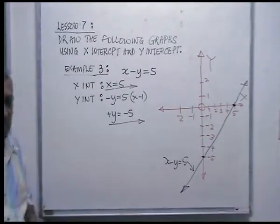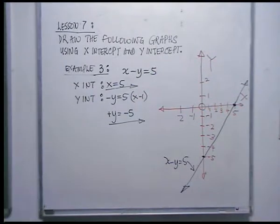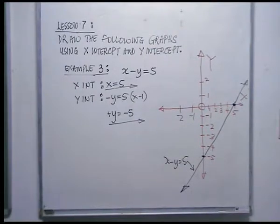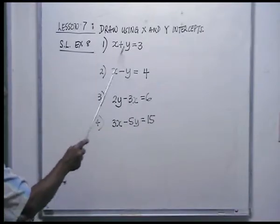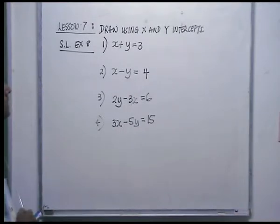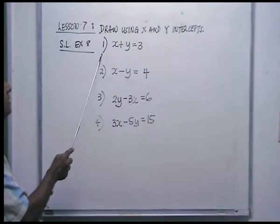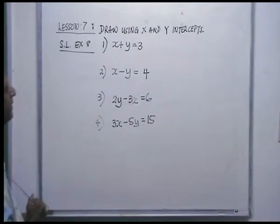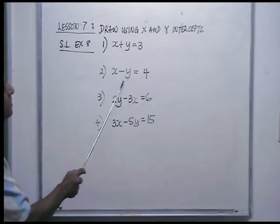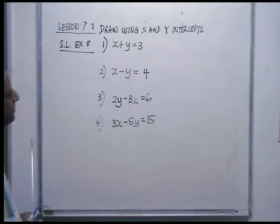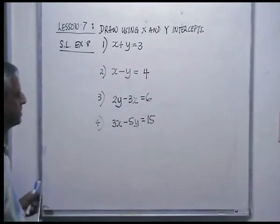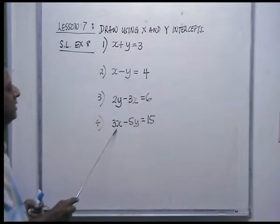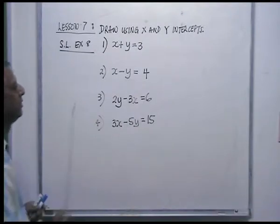With those three examples, you should be able to do an exercise. Here is Exercise 8: draw the following graphs using x and y-intercepts. Number 1: x plus y equals 3. Number 2: x minus y equals 4. Number 3: 2y minus 3x equals 6. Number 4: 3x minus 5y equals 15.